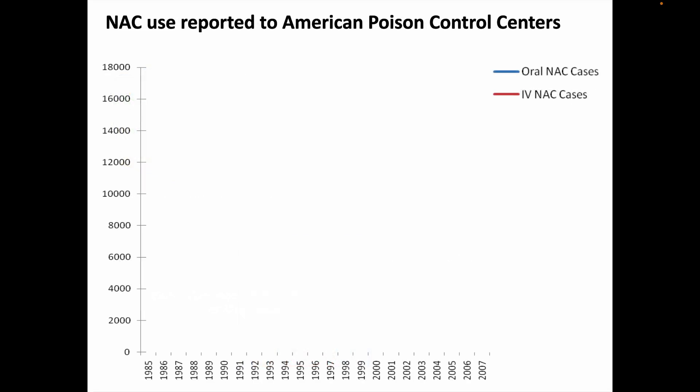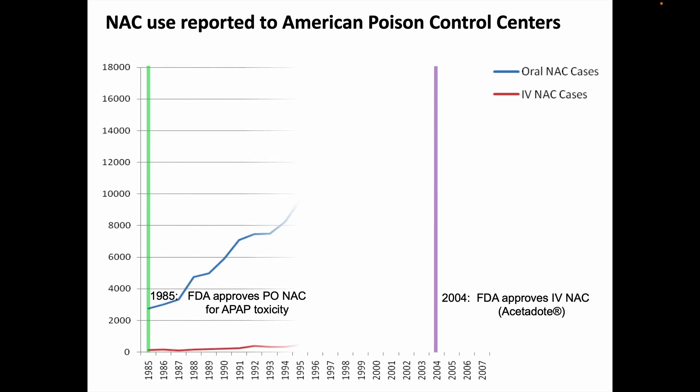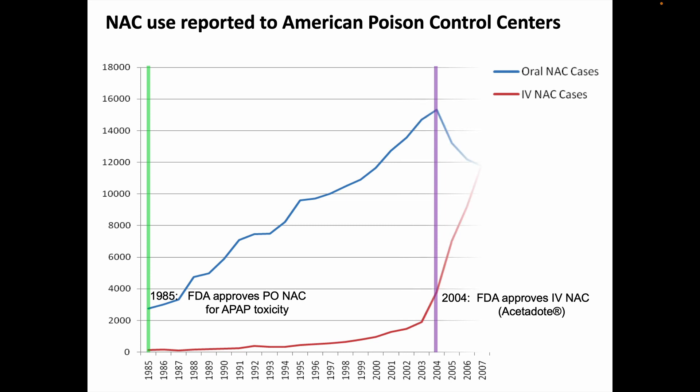Here is data collected from U.S. poison control centers regarding the number of reported uses of NAC by method of administration. In 1985, PO NAC was FDA approved, and in 2004, IV NAC was approved. The number of reported uses of PO was going up, presumably from better data capture, but then right around the time that IV NAC was approved, there was an abrupt shift with more and more times that N-acetylcysteine was given intravenously instead.